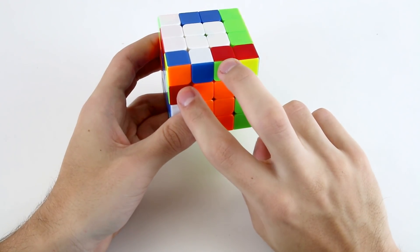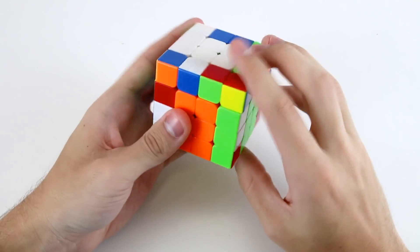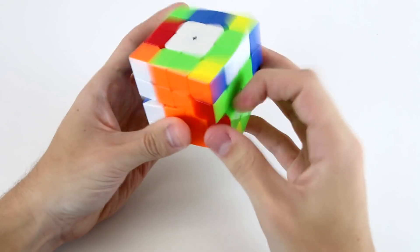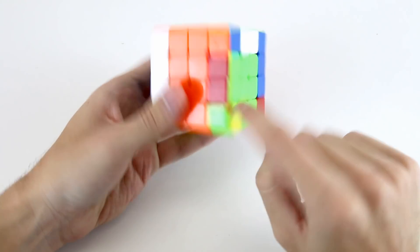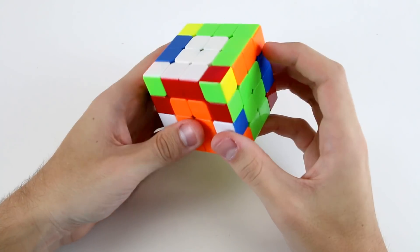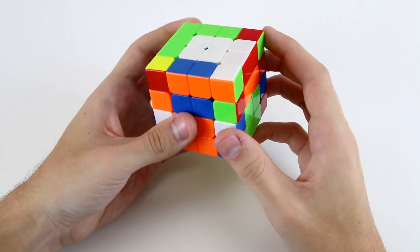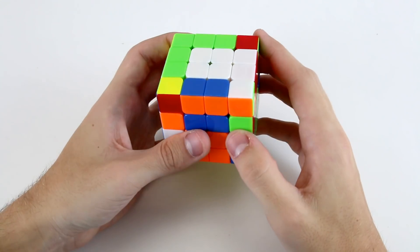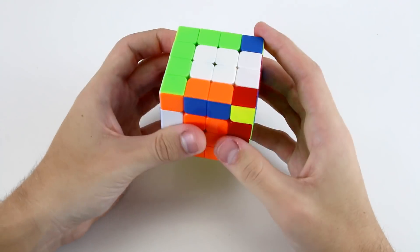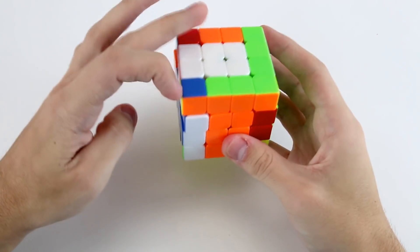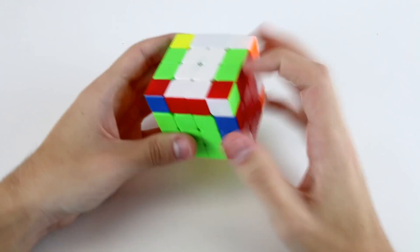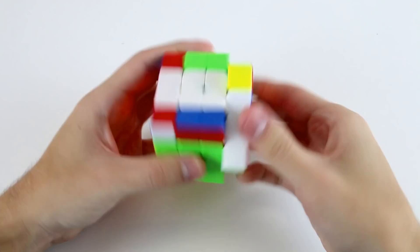Now I see I've got this f2l pair here and I want to solve these two without messing up this f2l pair here. So if I insert them like that and then do a slice move like that that's going to mess up that f2l pair. So what I can do is, what I would probably do is do a slice move and then the inverse of that flipping algorithm so r prime f r f prime r u prime r prime u like that.